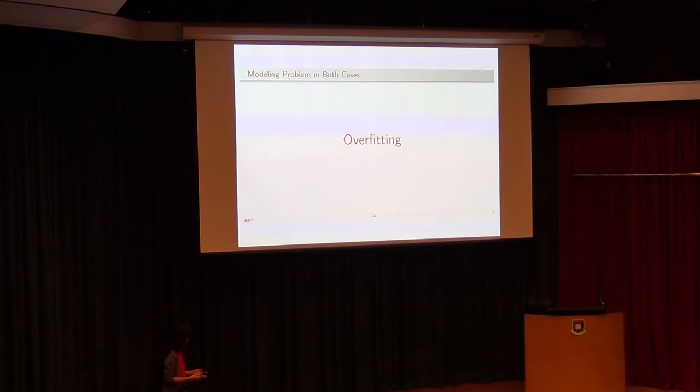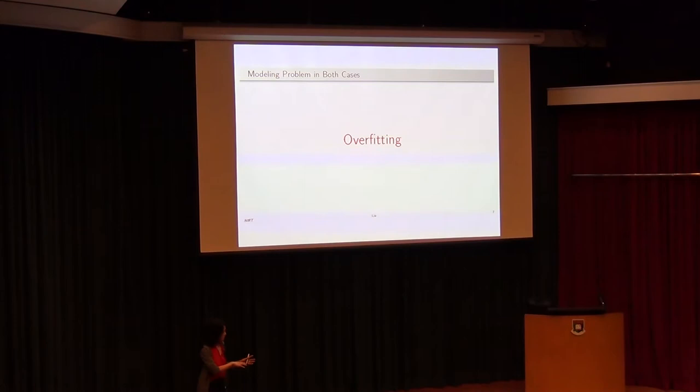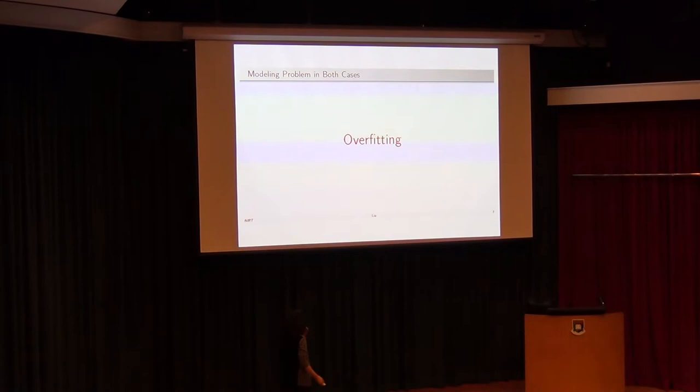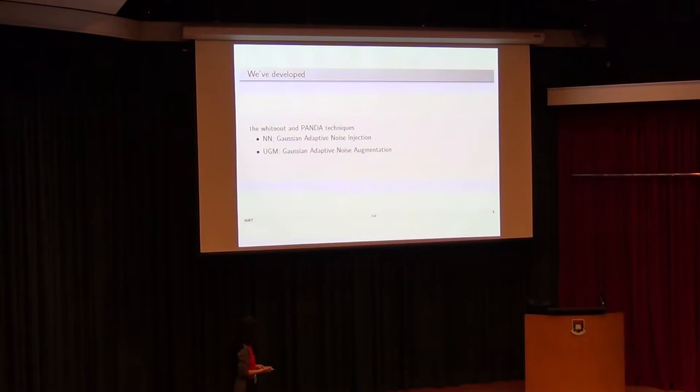In summary, in both neural networks and graphical models, the key problem — especially when you don't have a lot of data — is overfitting. The model trained on a dataset fits very well on the training data but fails to generalize to new data. We try to mitigate overfitting by using noise injection regularization techniques: WideOut for neural networks and Panda for undirected graphical models.